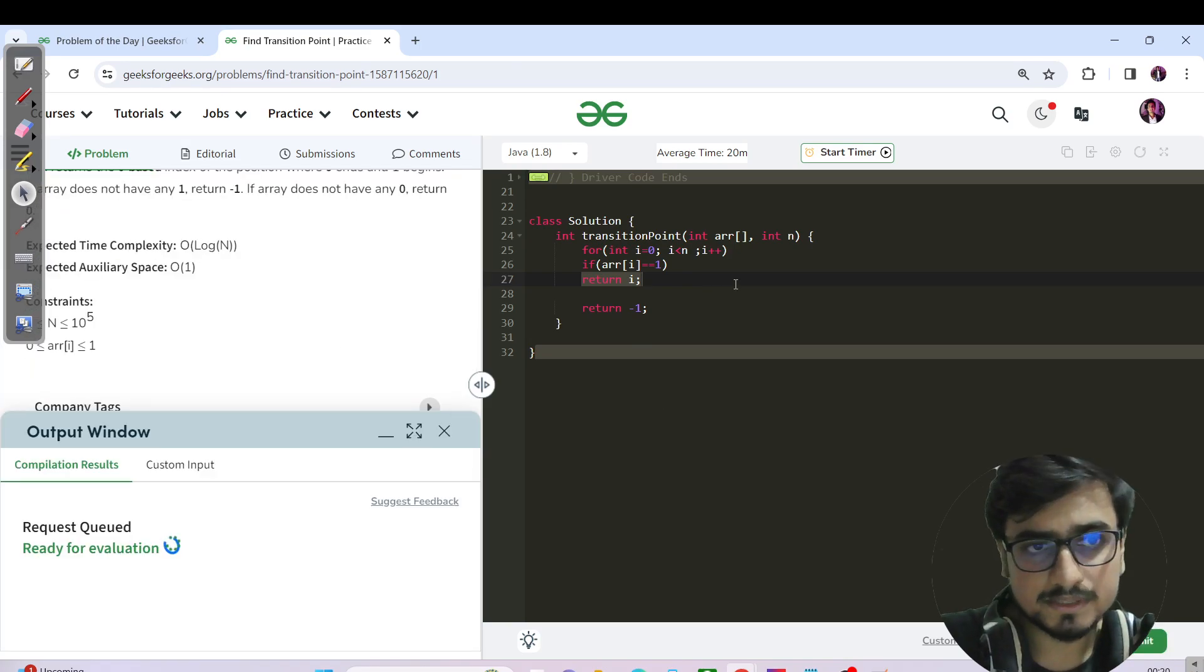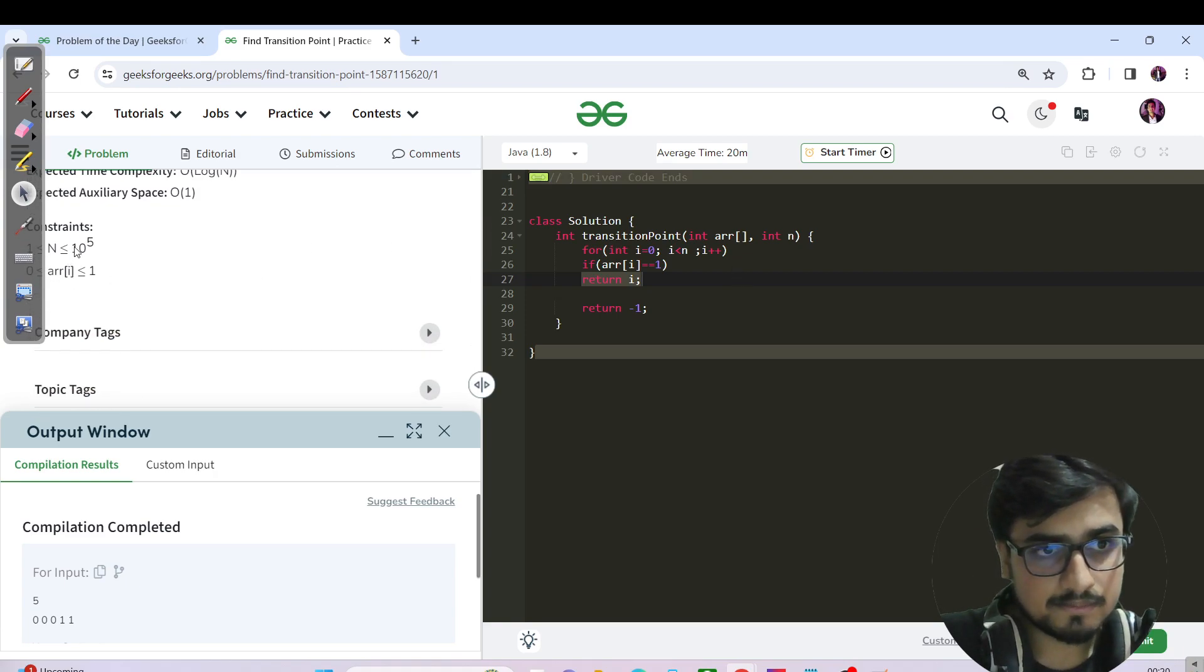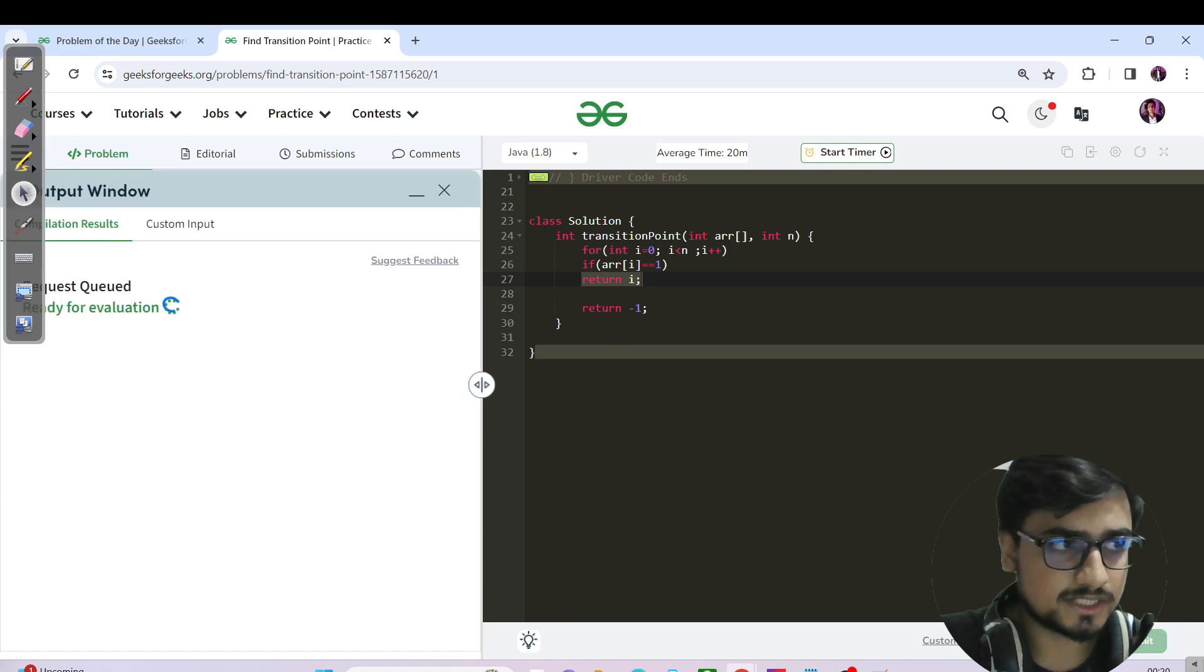Let's compile and run. While it is compiling and running, what is the time and space complexity? Time is O(n), space is O(1), n is 10 power 5. Great, so yeah brute force, this will be submitted and count as the submitted code.